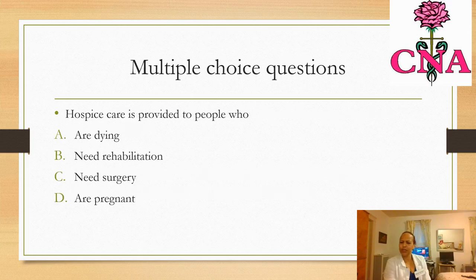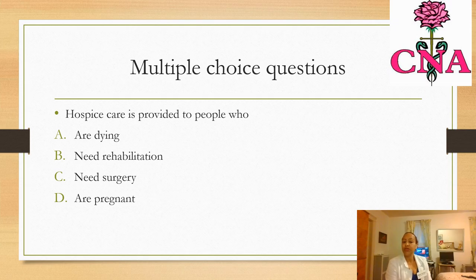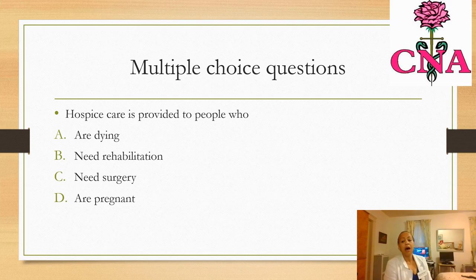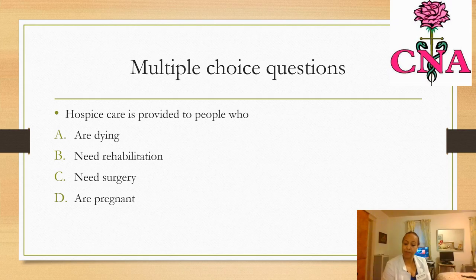Multiple choice: hospice care is provided to people who are (a) dying, (b) need rehabilitation, (c) need surgery, or (d) pregnant. Hospice is for patients or individuals that are dying, and also for their families. Keep that in mind.